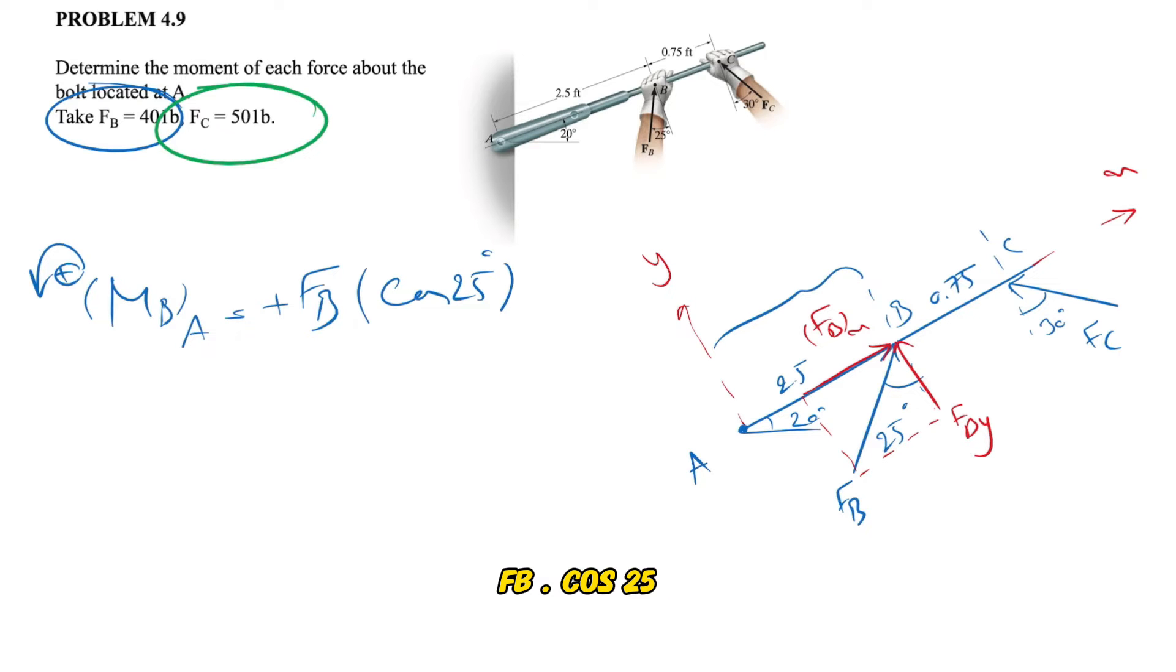So we'll have Fb cosine of 25 degrees and the distance simply will be this distance which we know is 2.5 feet. From here we can find the moment and the moment will be 90.6.